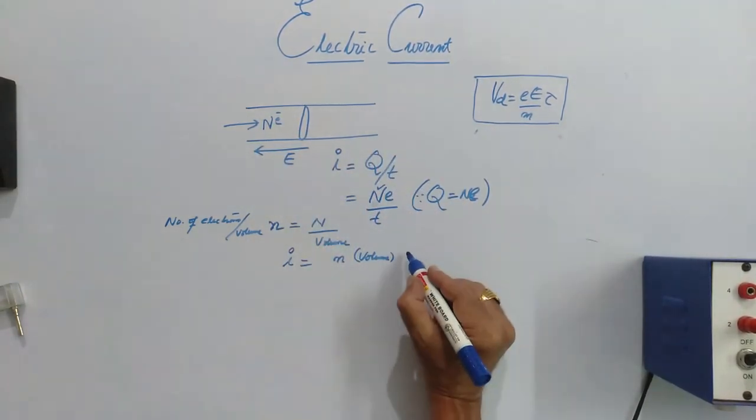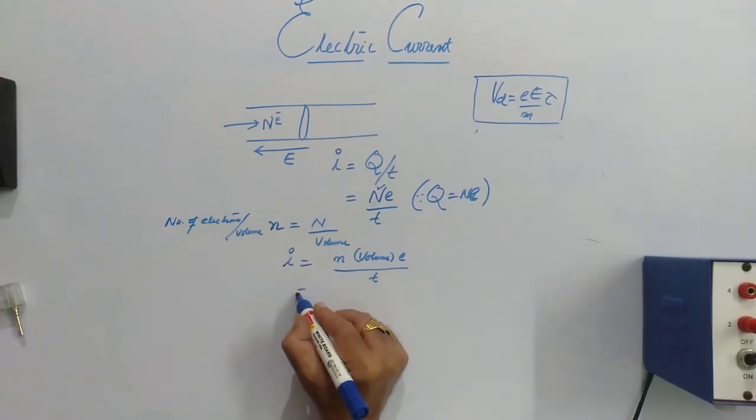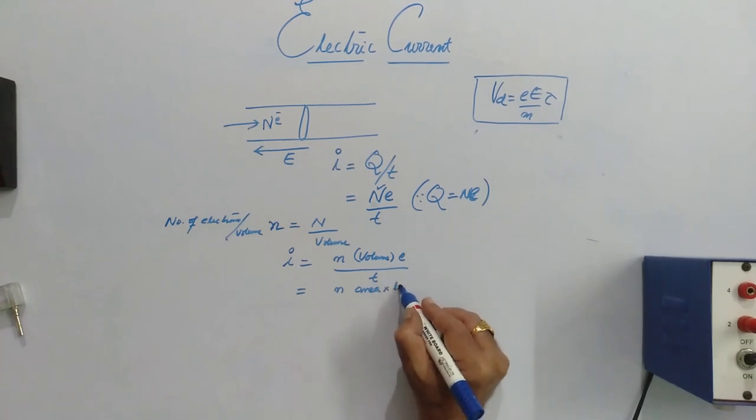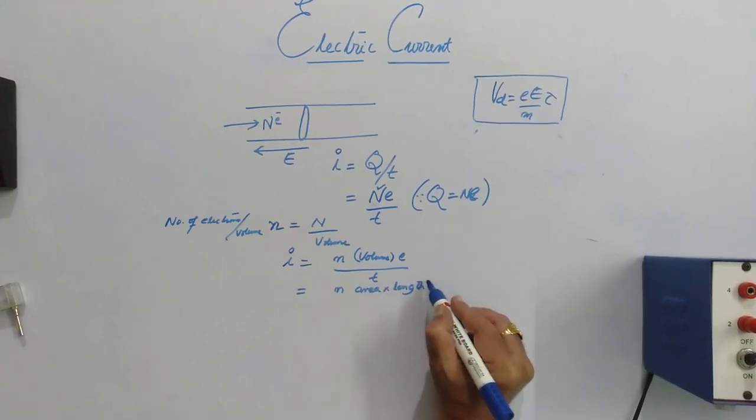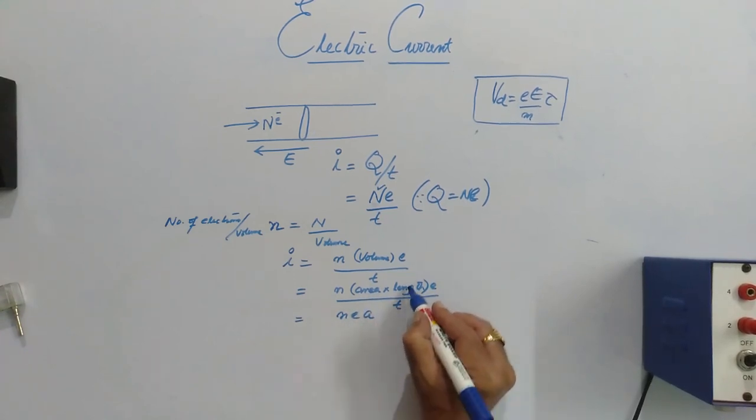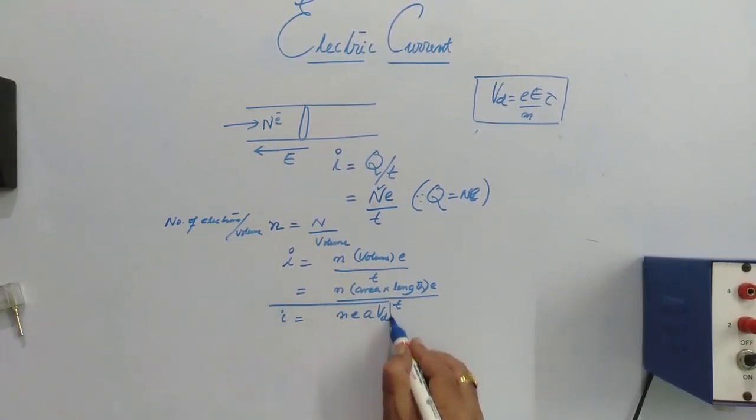Volume of what? Volume of the conductor by T. Now, this n volume can be written as area of cross section times length by time. Now, length by time can be written as speed. So, n, E, area A, length by time, speed, and this is only known as drift speed.